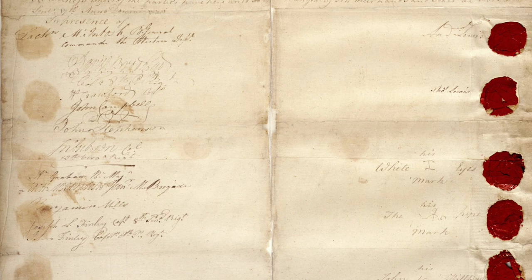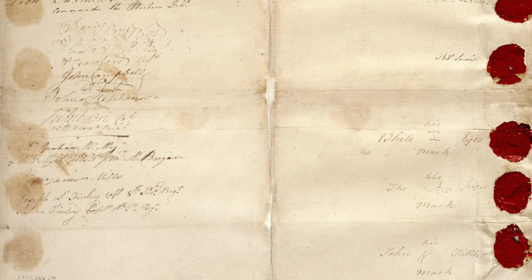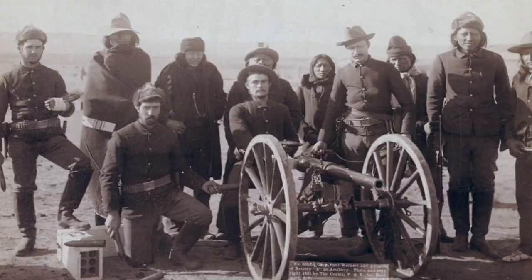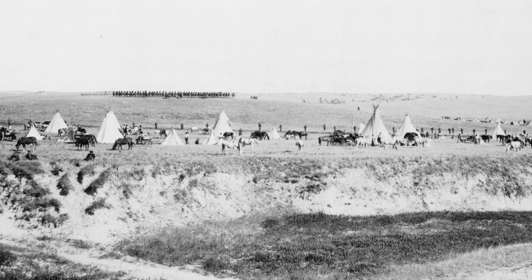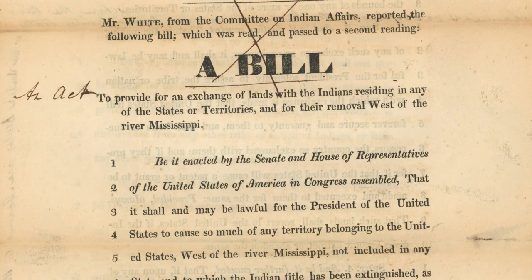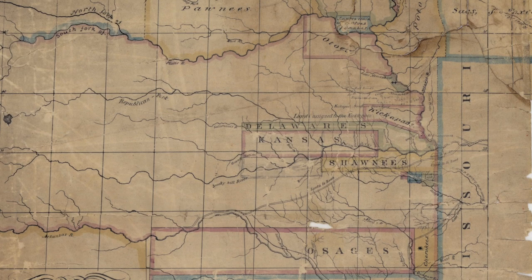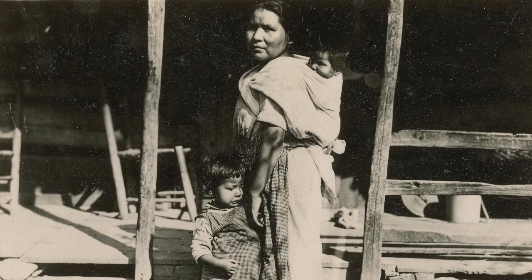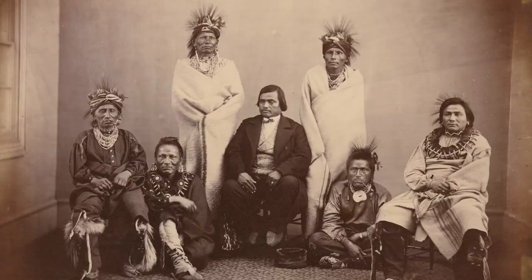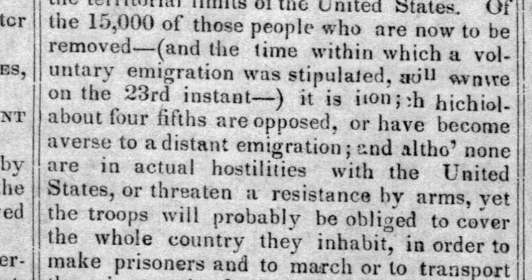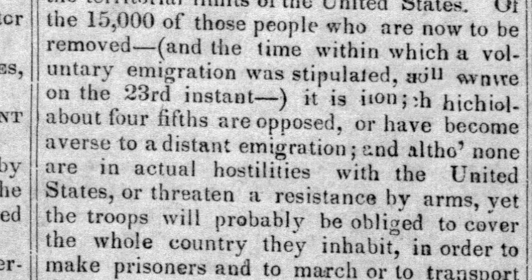Treaties solidify relationships between nations. The United States and Native nations signed close to 400 treaties together, forming the backbone of their shared history. But these treaties were not always respected. Consider the Indian Removal Act of 1830: efforts to expand westward under Manifest Destiny led the U.S. federal government to debate the status of the Cherokee, Muskogee Creek, Choctaw, Chickasaw, and Seminole nations — though few considered the perspective of Native nations.